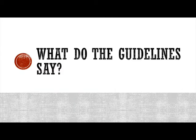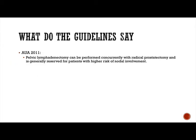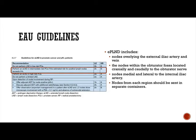What do the guidelines say? The AUA guidelines are pretty sparse. They say that pelvic lymphadenectomy can be performed and is generally reserved for patients with higher risk of nodal involvement, but there is no mention of the extent of nodes, whether we should do one side or both sides, or how far we should be going.